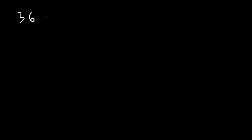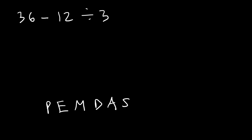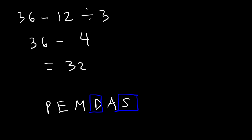Here's another example: 36 minus 12 divided by 3. Go ahead and take a minute to try this. Should we subtract before we divide, or should we divide first and then subtract? Using PEMDAS, division has more priority than subtraction since it's on the left side, so we need to divide first. 12 divided by 3 is 4, and 36 minus 4 is 32. So that's the answer.